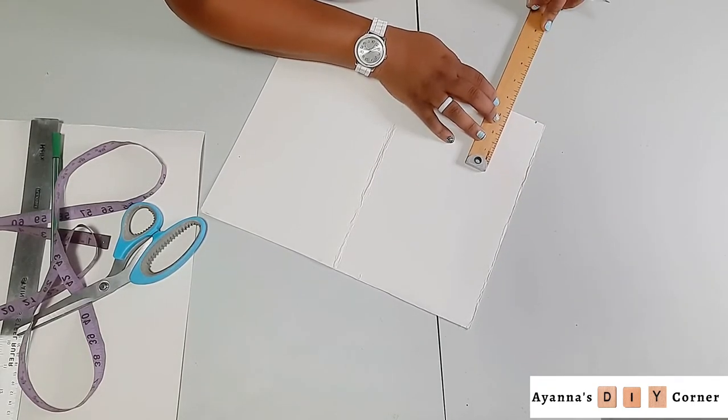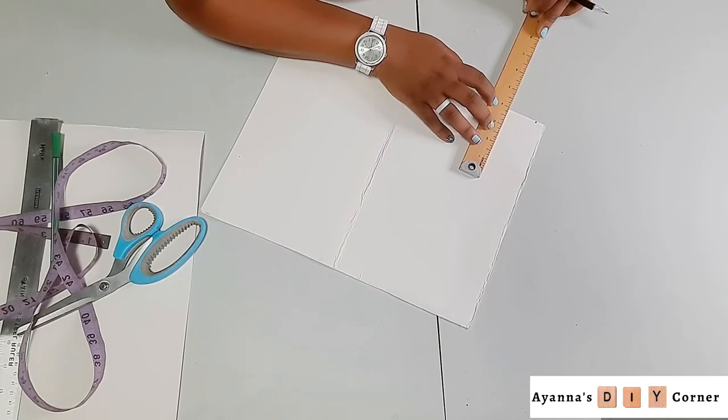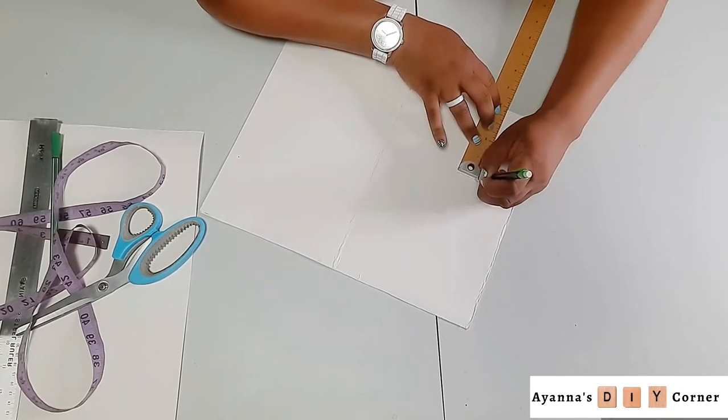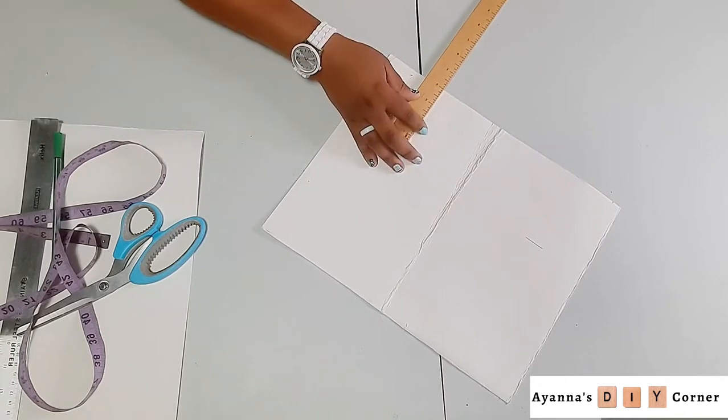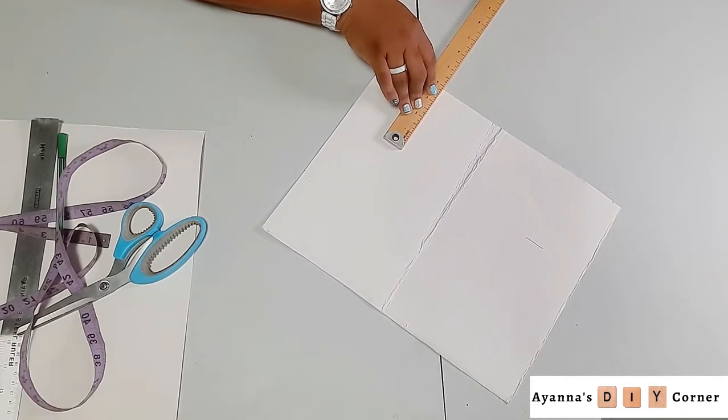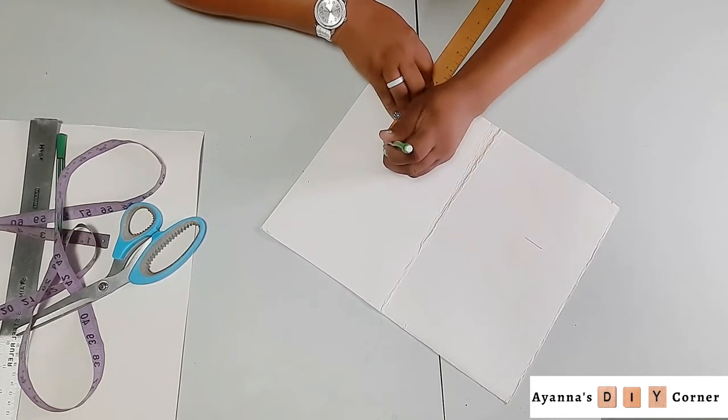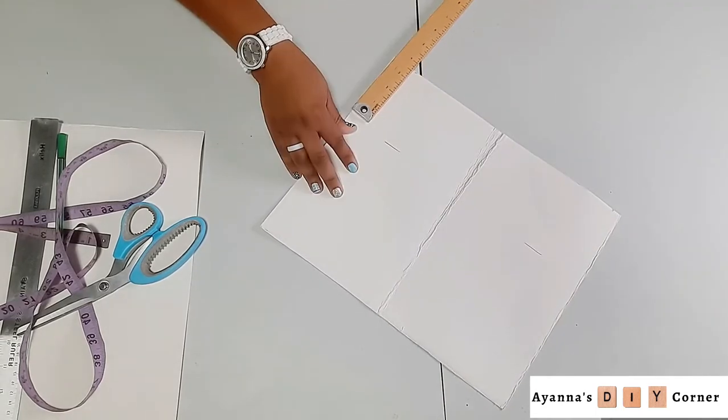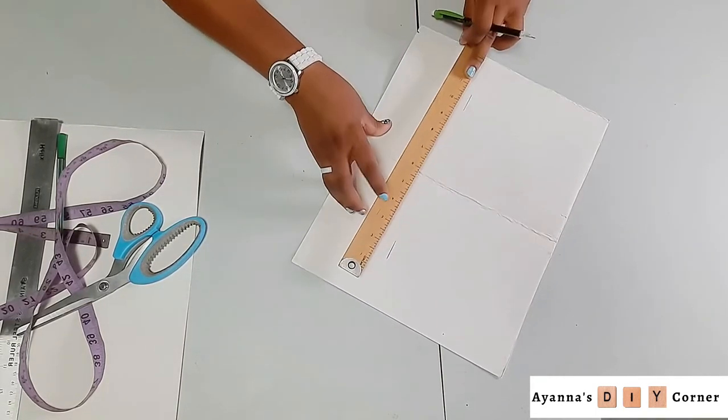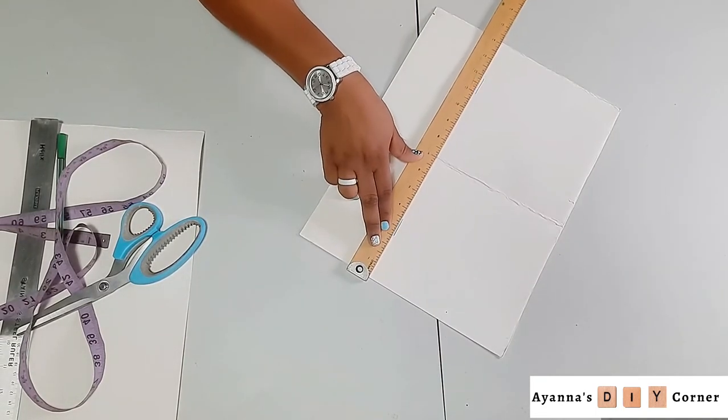Consider how wide you want that body piece to be. Normally for a bucket hat, it's either 3 or 3.5 inches in width. I'm going 3.5 inches, using that 0.5 as my seam allowance. So truly, the width of my body is going to be 3 inches.